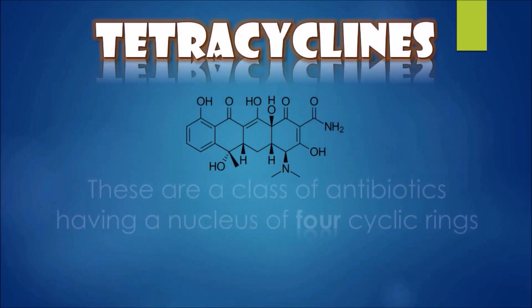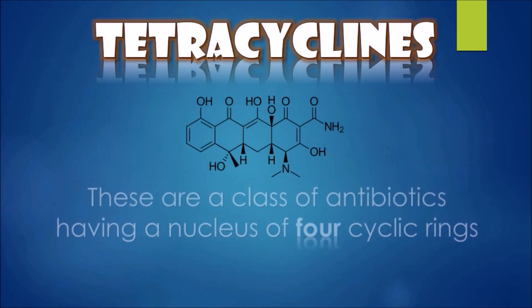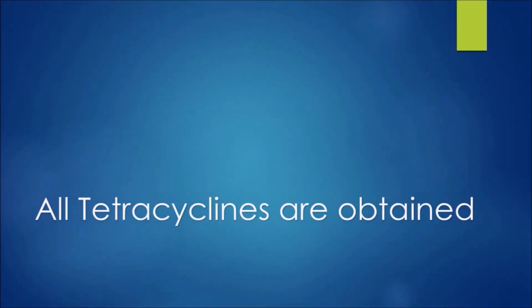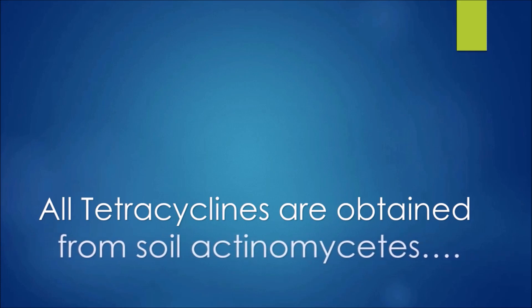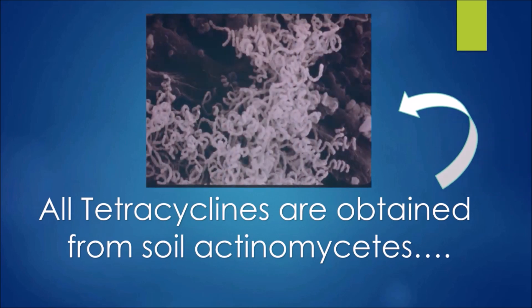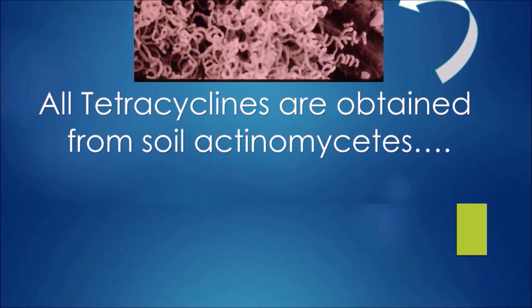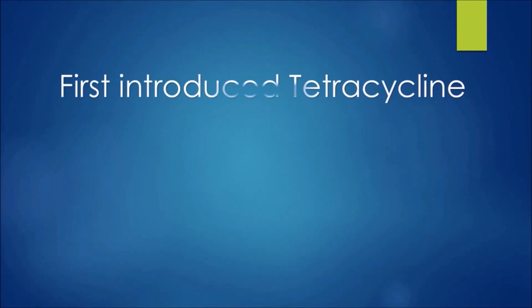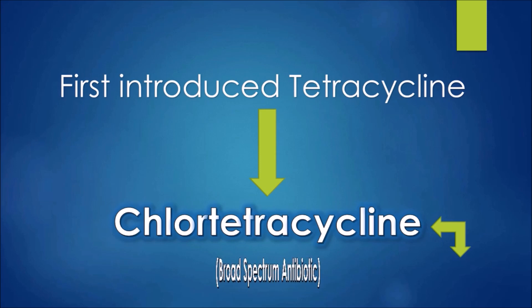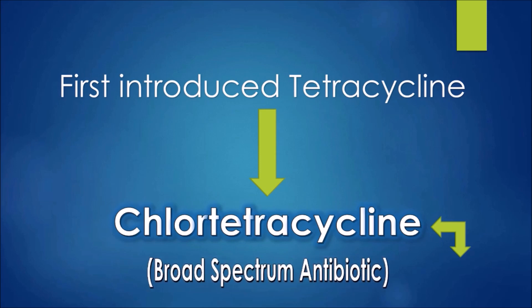Tetracyclines are a class of antibiotics having a nucleus of four cyclic rings. All tetracyclines are obtained from soil actinomycetes. The first introduced tetracycline, plus tetracycline, is a broad-spectrum antibiotic.